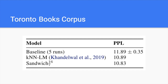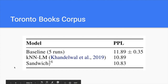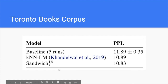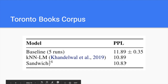They also apply this to a different domain: the Toronto Books corpus, which differs from Wikipedia. The baseline achieves 11.8 perplexity with five runs, while the previous state-of-the-art KNN language model achieves 10.8. Surprisingly, the sandwich transformer with K=7 performs as well as the state-of-the-art — slightly better, though not significantly — while significantly outperforming the baseline by about 1 perplexity point, effectively achieving state-of-the-art on the Toronto Books corpus.